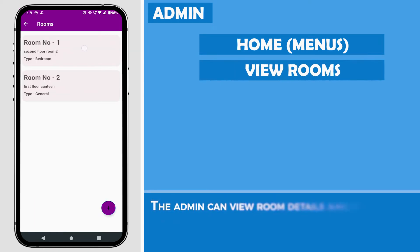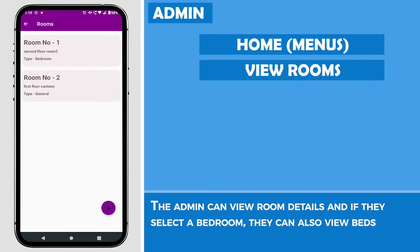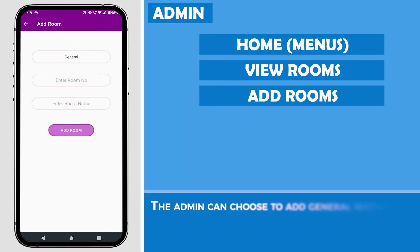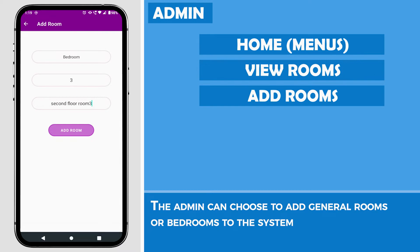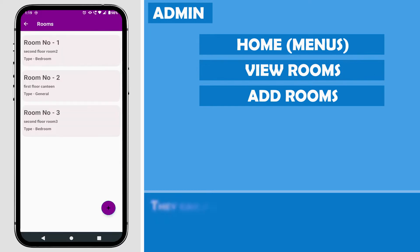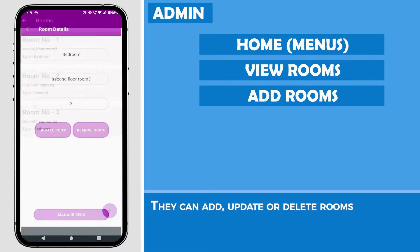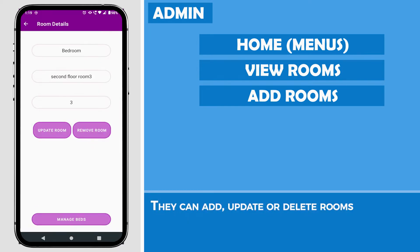The admin can view room details, and if they select a bedroom, they can also view beds. The admin can choose to add general rooms or bedrooms to the system, and can add, update, or delete a room.